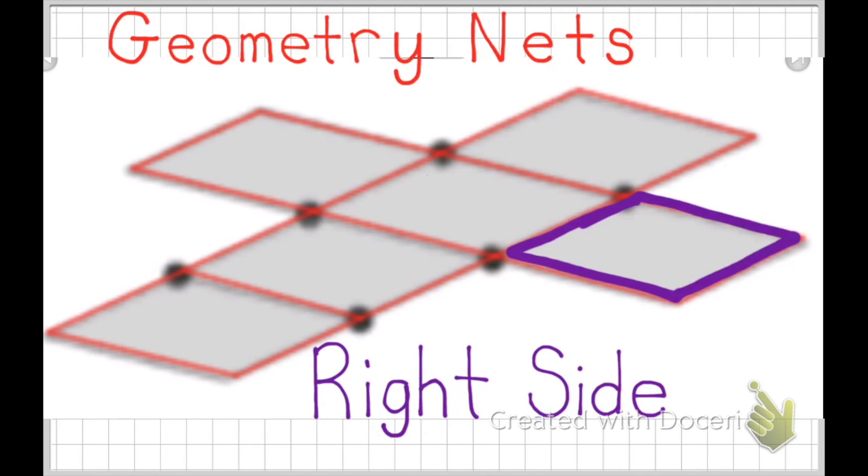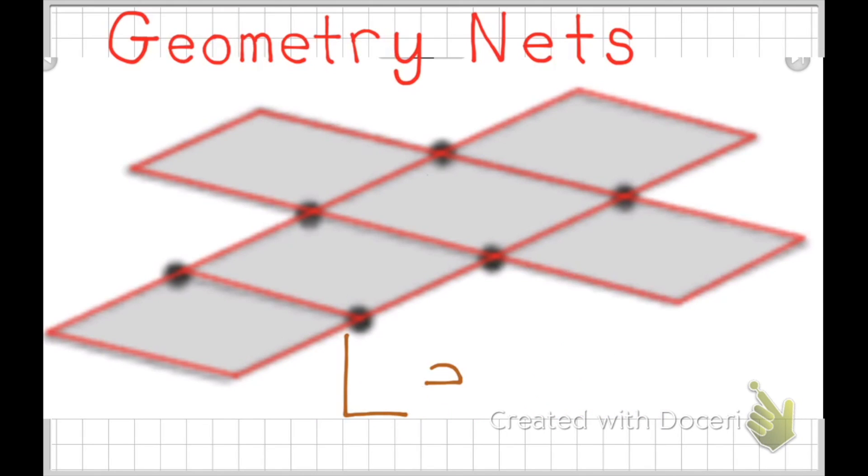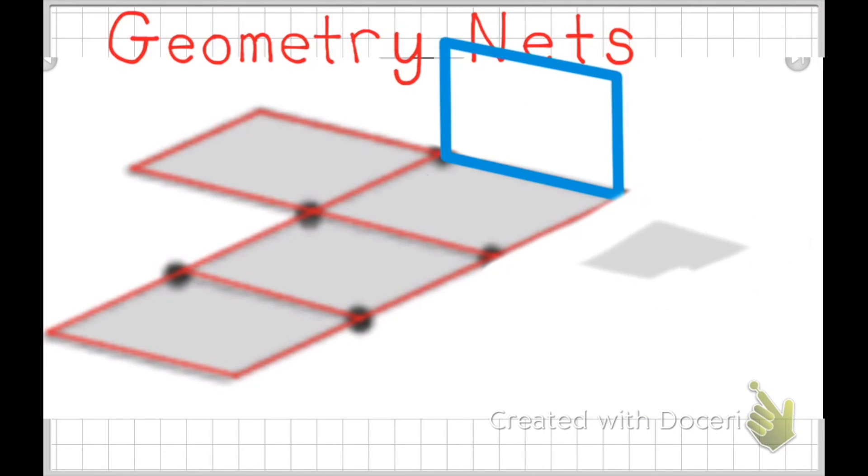The purple section represents the right side. And the brown section represents the left side. You can fold these sections up to form a cube.